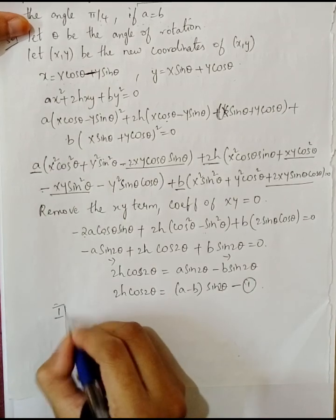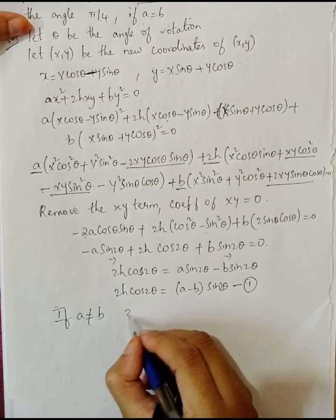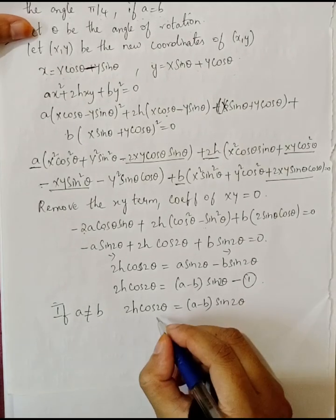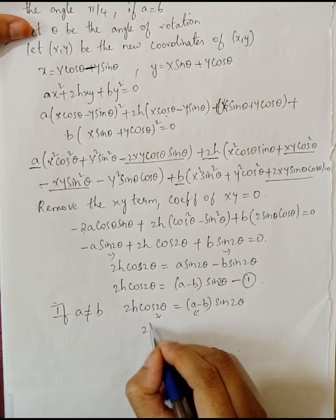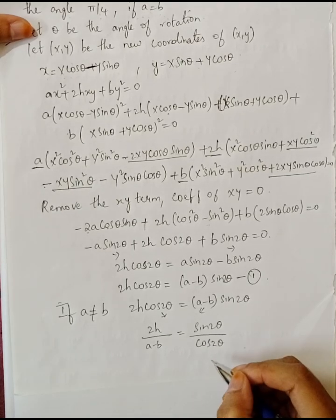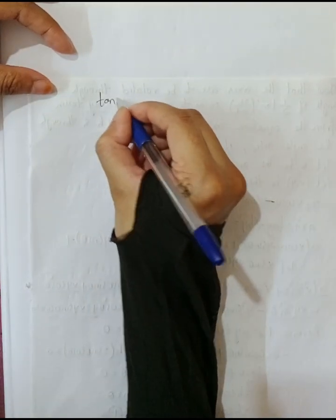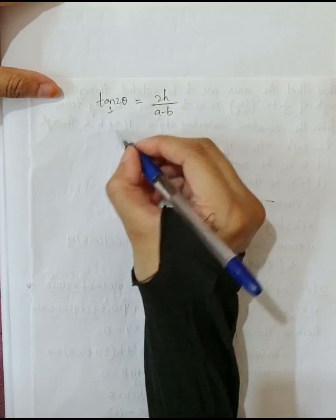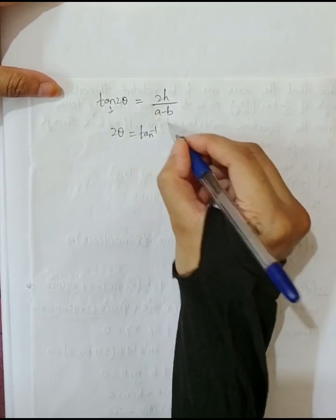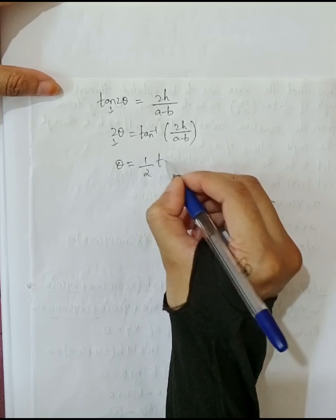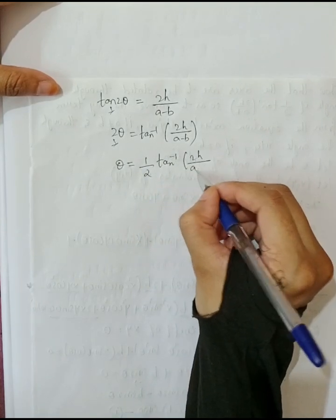Case 1: if a is not equal to b. From equation 1: 2h cos 2theta equals (a minus b) sin 2theta. Shifting cos 2theta and (a minus b) across: 2h by (a minus b) equals sin 2theta by cos 2theta, which is tan 2theta. So tan 2theta equals 2h by (a minus b). Therefore 2theta equals tan inverse of 2h by (a minus b), and theta equals half tan inverse of 2h by (a minus b).